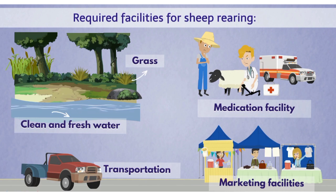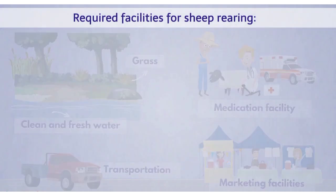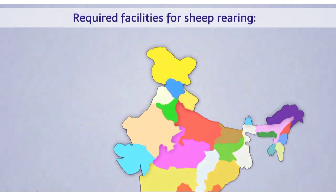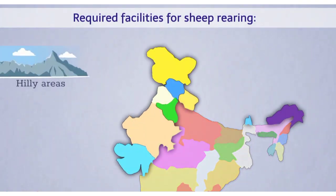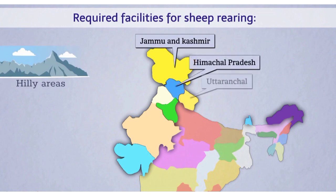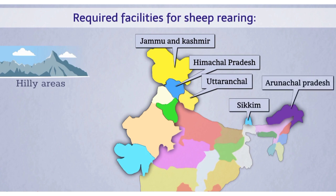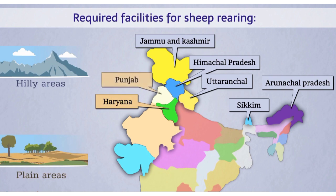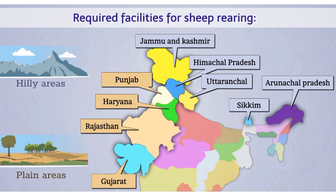In India, sheep rearing takes place in hilly areas such as Jammu and Kashmir, Himachal Pradesh, Uttaranchal, Sikkim, and Arunachal Pradesh. It also takes place in some plain areas - that is Haryana, Punjab, Rajasthan, and Gujarat.